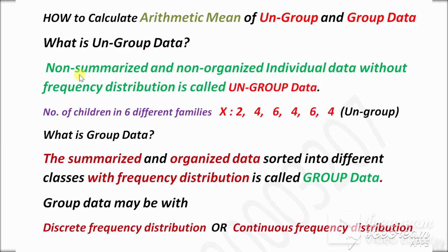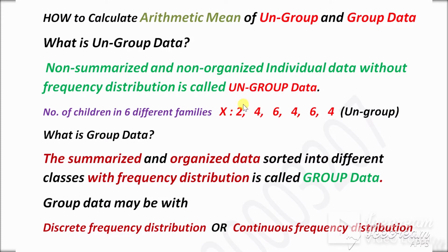What is ungrouped data? Non-summarized and non-organized individual data without frequency distribution is called ungrouped data. For example, the number of children in six different families — each number is individually recorded without frequency. These are non-organized, non-summarized, and without frequency. So this type of data is called ungrouped data.